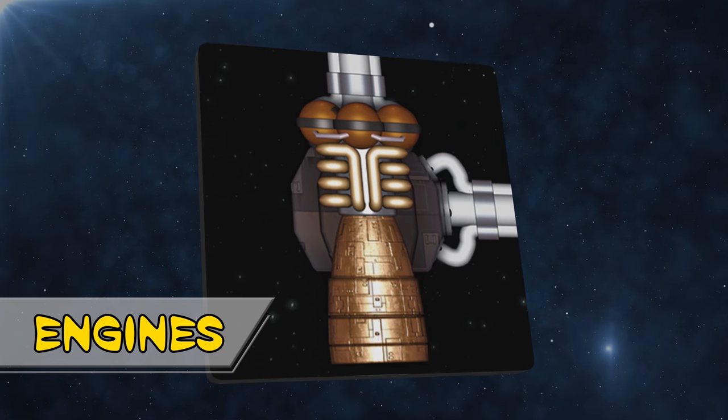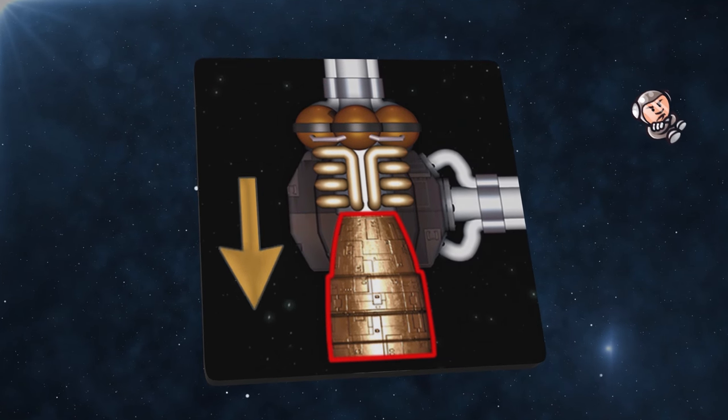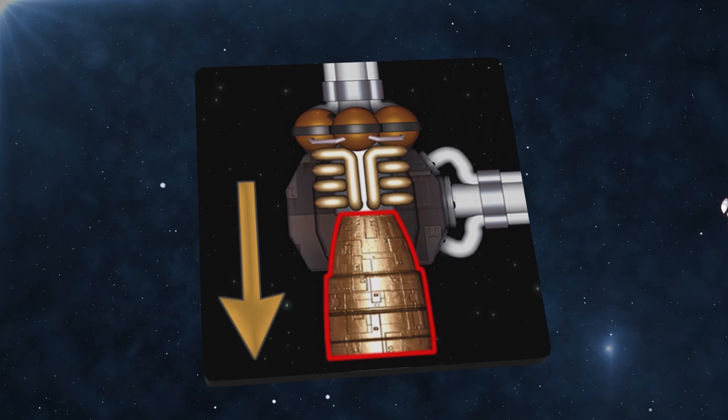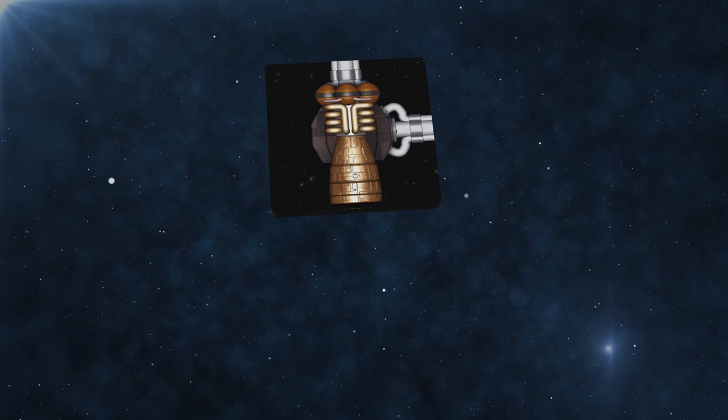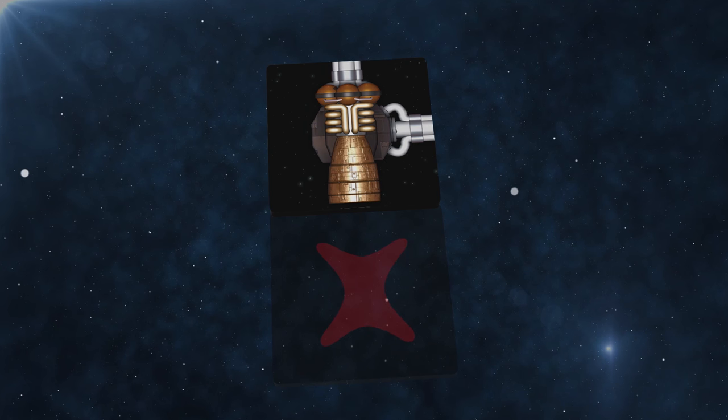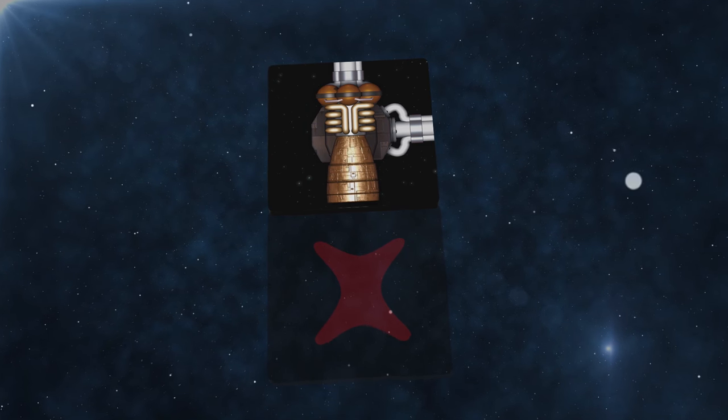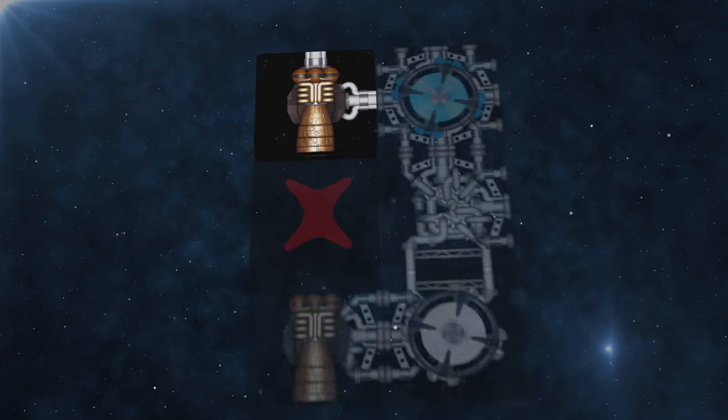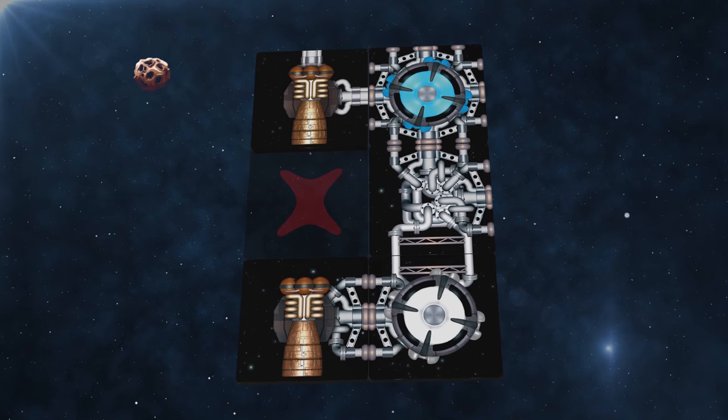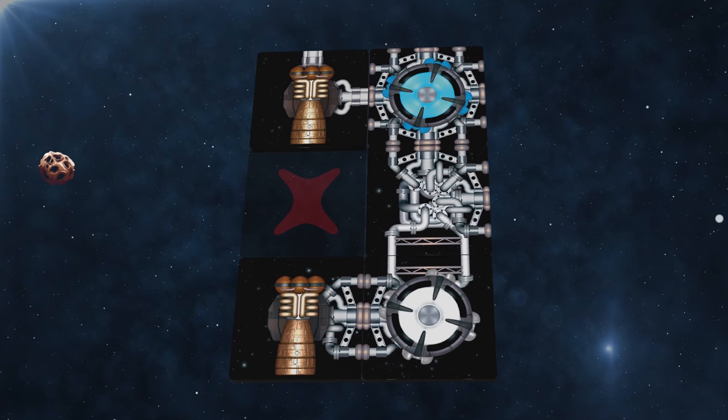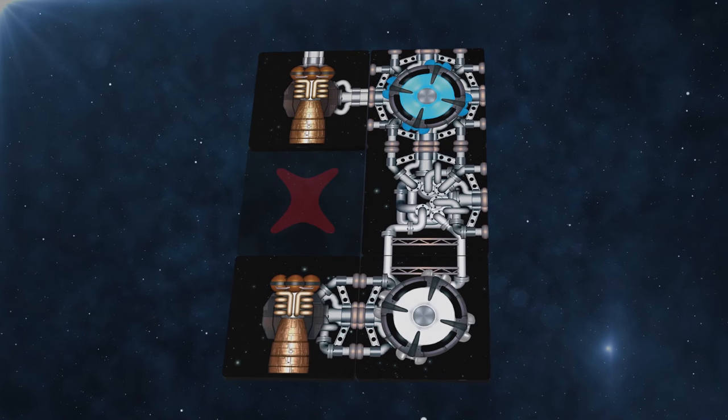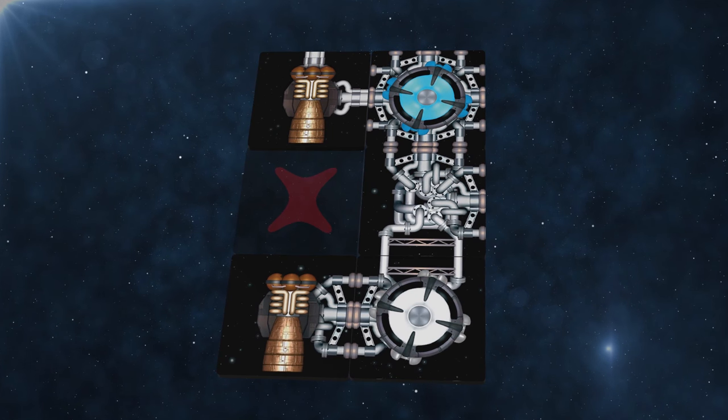Engines have special building rules. First the exhaust port must point to the rear of your ship and the space directly behind the exhaust port must be empty. This doesn't mean that the engine has to be at the back of your spaceship. This for example is okay as long as no component is placed on the space with the X. Ships with more engines are faster so you want as many engines as possible.